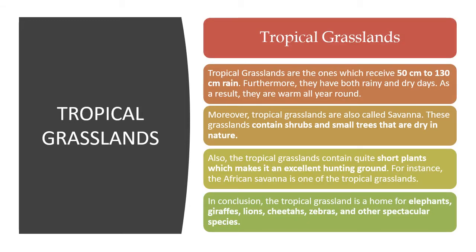Tropical grasslands receive approximately 50 to 130 centimeters of rain and as a result are warm throughout the year. Also referred to by the term savannah, these grasslands contain shrubs and very small dry trees. The tropical grasslands contain quite short plants, which makes it an excellent hunting ground. For instance, the African savannah is one of the tropical grasslands — home to very big animals like elephants, giraffes, lions, cheetahs, zebras, and other spectacular species. They receive high rainfall but are also in a dry climatic region, which supports the growth of even small trees.